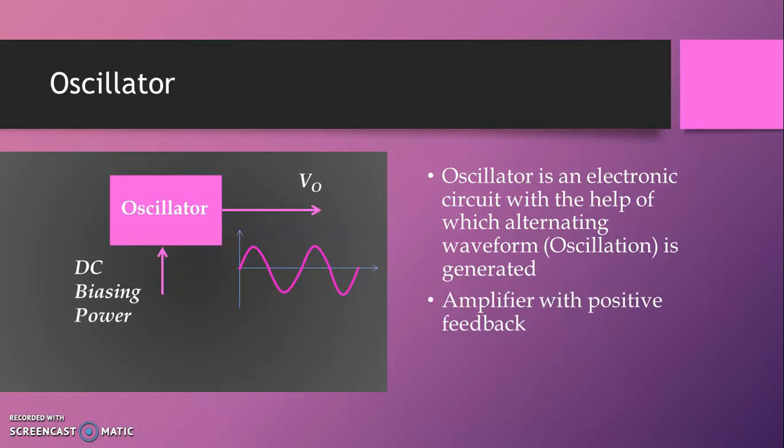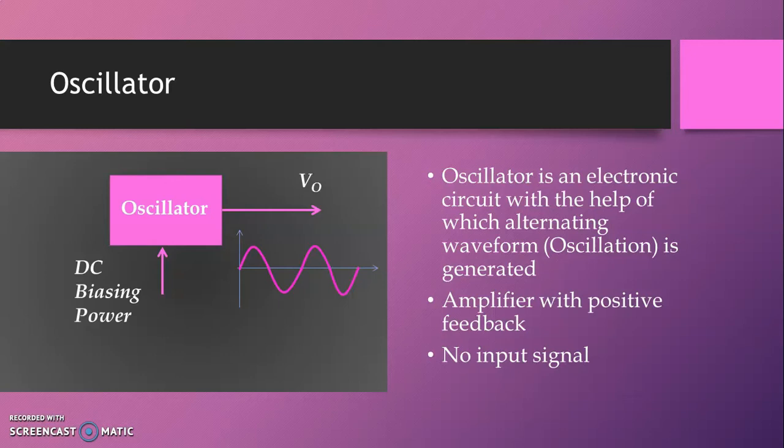An oscillator is nothing but an amplifier with positive feedback. No input signal is required. To make an oscillator, we require only an amplifier and positive feedback — there is no need for an input signal. Only biasing voltage is required.